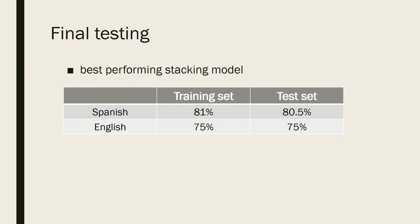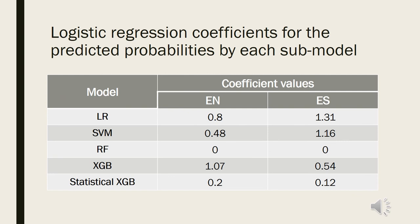Although the accuracy results on the training set of our final models were not better than those of our early bird models — and in the case of the Spanish data, they were even lower by two percentage points — since we managed to avoid overfitting, our final test results did not drop significantly compared to the results on the training sets. Our final test results are significantly better compared to our early bird test results. Finally, I just want to show the logistic regression coefficients of the predicted probabilities of each model. Since these variables are highly correlated, this should be interpreted with caution. But it is interesting to see that the random forest model got a zero coefficient in both languages. And although the statistical variables-based model is probably the least correlated with the other models, it has a relatively low coefficient in both languages, which could indicate that these variables are less informative in the identification of fake news spreaders compared to the word n-grams.